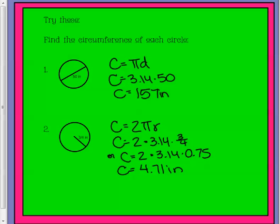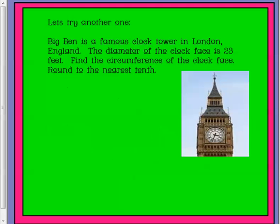Make sure that you have checked your work. Let's look at a real-world situation. Big Ben is a famous clock tower in London, England. The diameter of the clock face is 23 feet. Find the circumference of the clock face. Round to the nearest tenth.